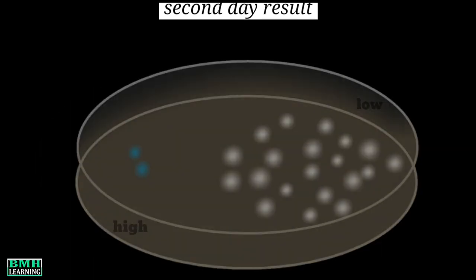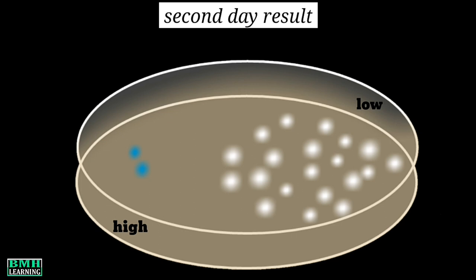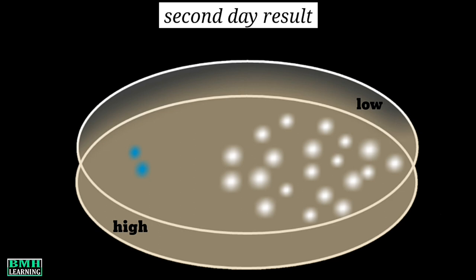Now we observe the secondary results. We will have two types of colonies, and the nature of the colonies depends on which side of the Petri plate they are formed. At the end of the plate with low concentration of antibiotic, we will observe wild-type colonies, which will be more in number. At the opposite end of the plate, E. coli mutant colonies may be produced, and these would be few in number.